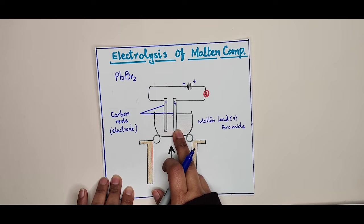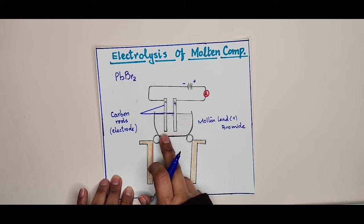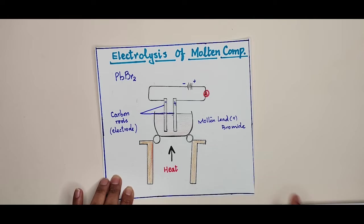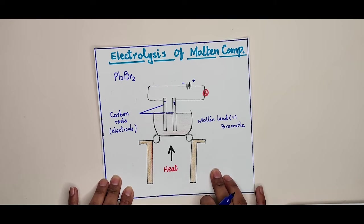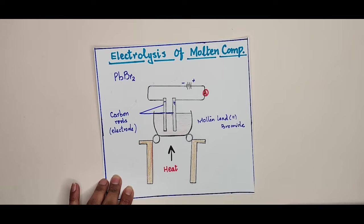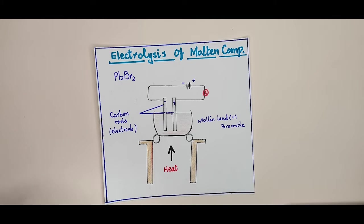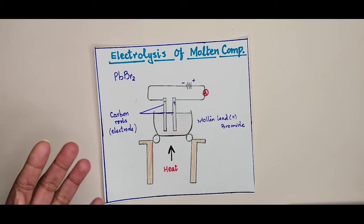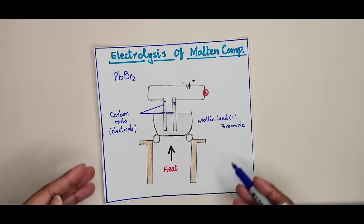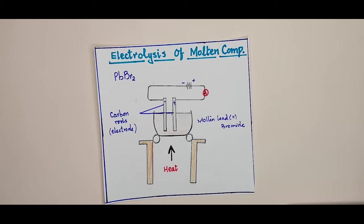While the current is flowing, observe what happens around the positive electrode and what happens around the negative electrode. After the experiment, remove the carbon rods from the molten lead bromide using tongs. Pour the contents of the crucible into a small beaker to check what is left behind.